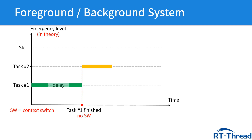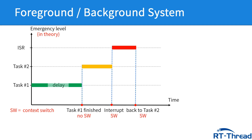If an interrupt happens at this moment, the CPU will do a context switch from task 2 to the interrupt. When the interrupt finishes, task 2 will continue running to the end. Thus, we can see there are 3 main drawbacks in the foreground-background system.